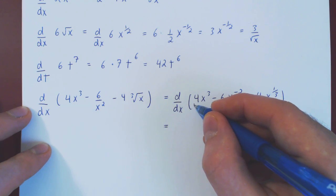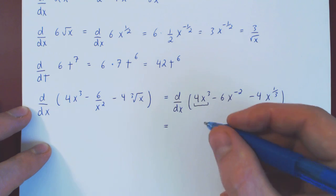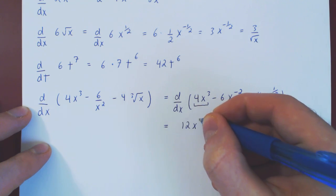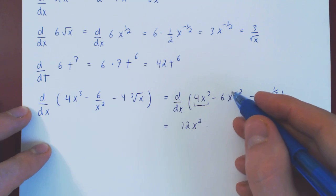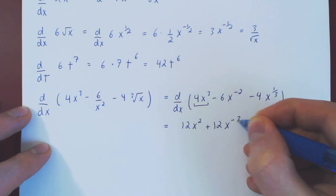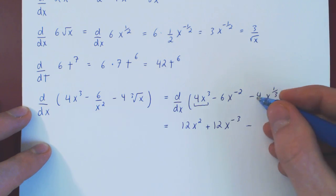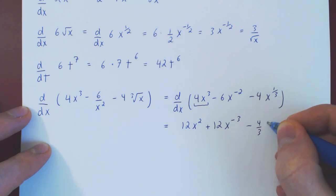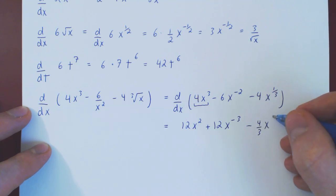The derivative of 4x cubed will be 12x squared, and here this will be a plus. Negative 6 times negative 2 is positive 12, x to the negative 3 by the power rule. Minus 4 thirds, x to the 1 third minus 1, negative 2 thirds. And that's it.